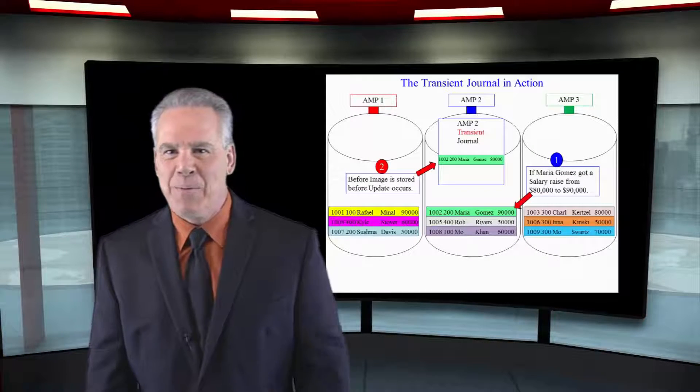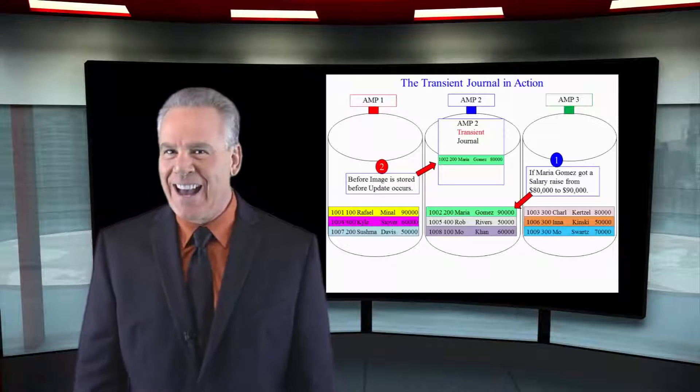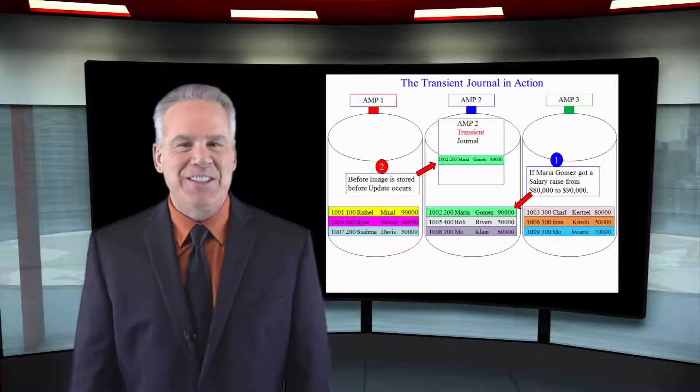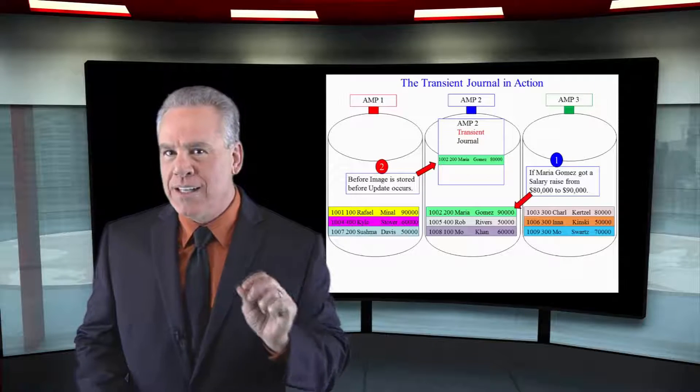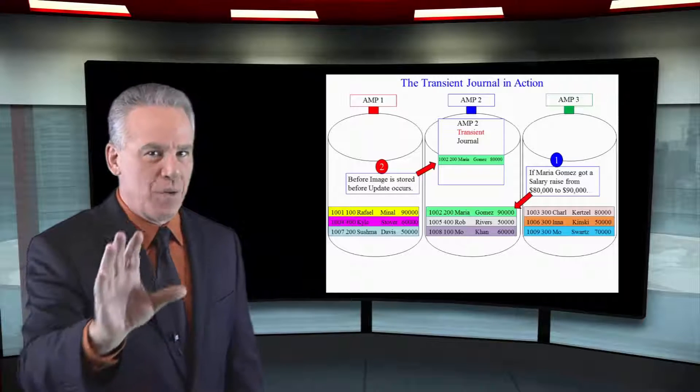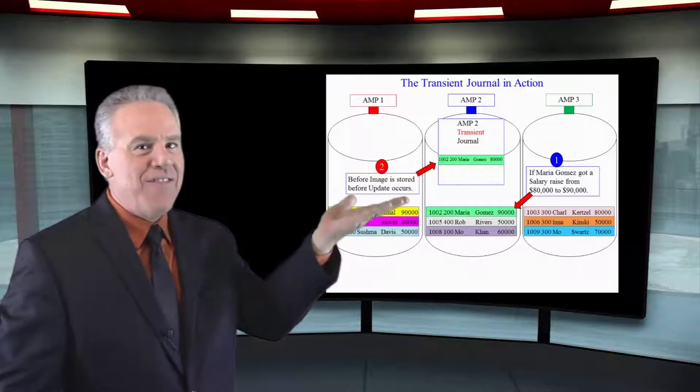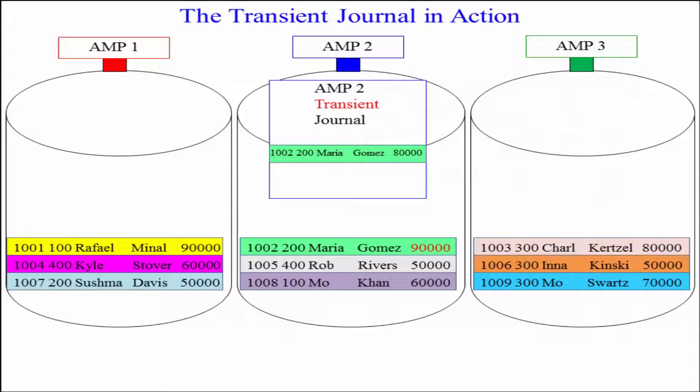In this example, Maria Gomez is getting a raise from $80,000 to $90,000. She must have got her certifications. So before the update takes place, they take a picture of the entire row of Maria Gomez. They stick it in that AMP's transient journal, and then they update the row to $90,000. If everything goes well, they just throw away the transient journal. That's why it's called the transient journal.